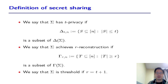We say that sigma is threshold if R is equal to T plus 1. In other words, any T or fewer players know nothing about the secret. However, any T plus 1 or more players can completely reconstruct the secret.